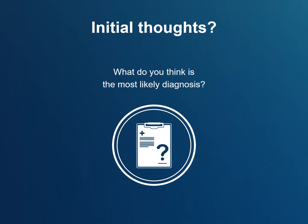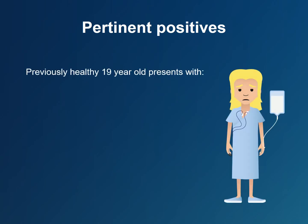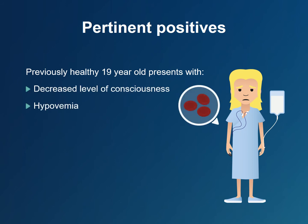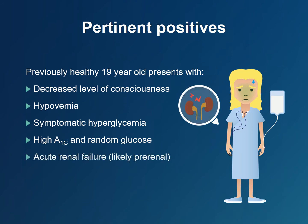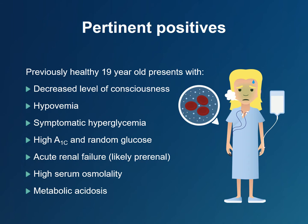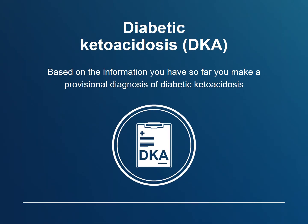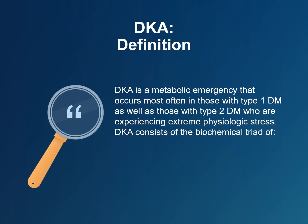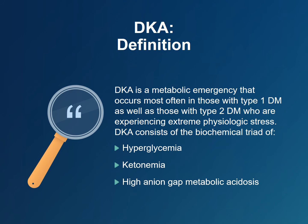What are your initial thoughts about the case so far? We have a previously healthy 19-year-old presenting with decreased level of consciousness, hypovolemia, symptomatic hyperglycemia, high hemoglobin A1c and random blood sugar, acute renal failure, high serum osmolality, and metabolic acidosis. Based on the information you have so far, you make a provisional diagnosis of diabetic ketoacidosis or DKA. DKA is a metabolic emergency that occurs most often in those with type 1 diabetes and those with type 2 diabetes who are experiencing extreme physiologic stress. DKA consists of the biochemical triad of hyperglycemia, ketonemia, and a high anion gap metabolic acidosis.